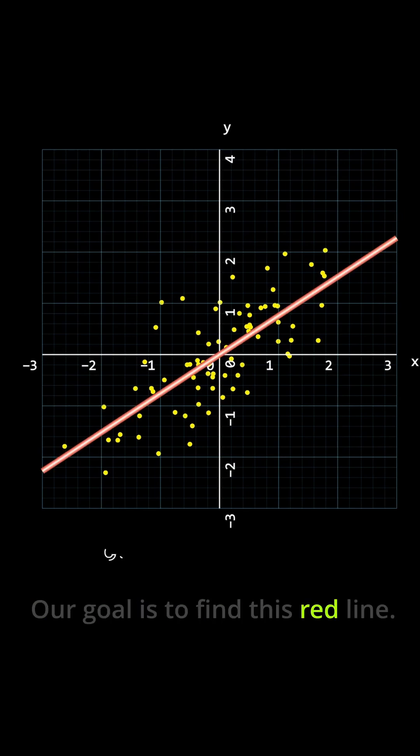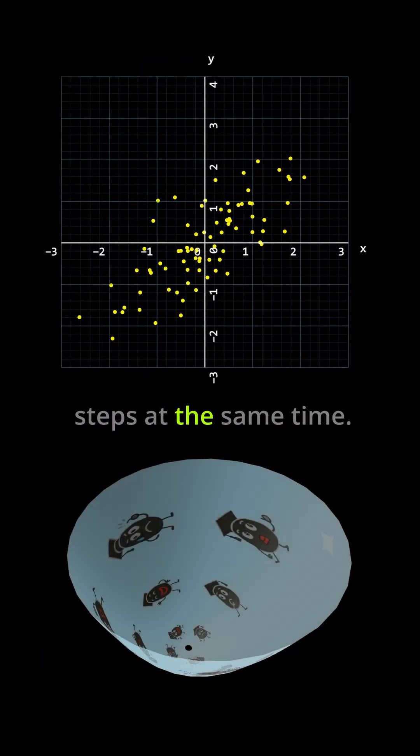Our goal is to find this red line. We'll use SGD to estimate that line. You'll see the line move, and you'll see the gradient descent steps at the same time.